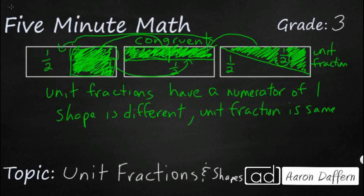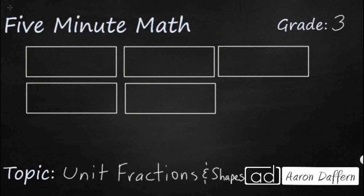Let's find another example using these same rectangles. We want to make some more unit fractions that have the exact same area but different shapes. We can start with a horizontal line across the middle and a vertical line that cuts each half in half — so each of these little pieces is the unit fraction one fourth.